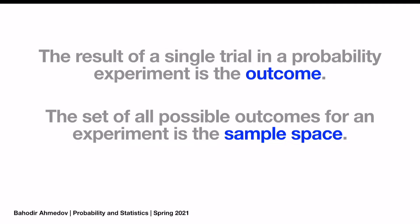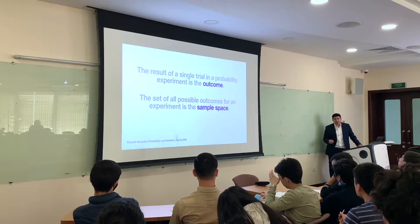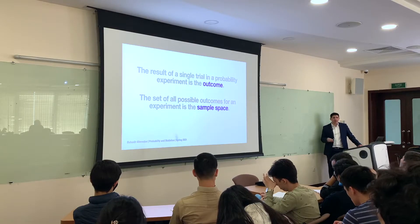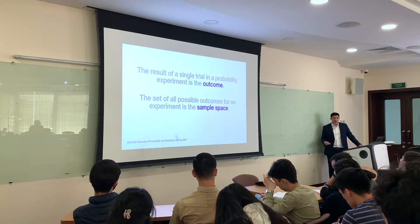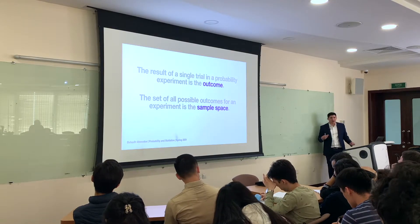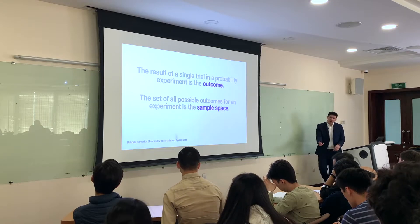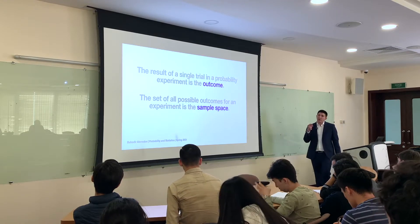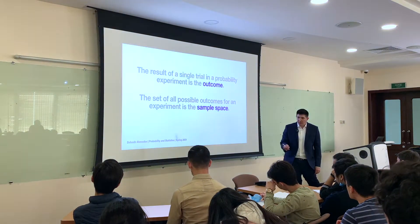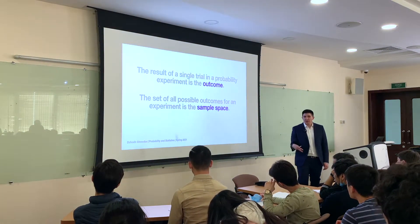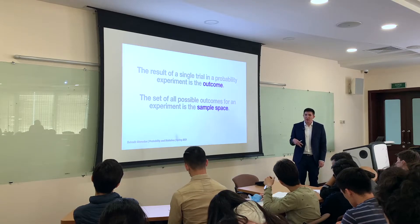The set of all possible outcomes for the experiment is called the sample space. It's important to write down some notations. If you roll a die, you've got six different outcomes. The result of every rolling of a die we're going to call an outcome. So what kind of outcomes can you have? One, two, three, four, five, six.